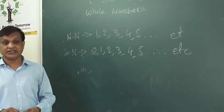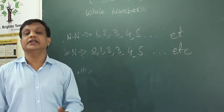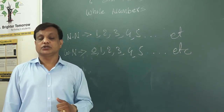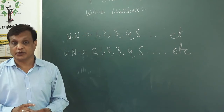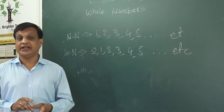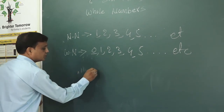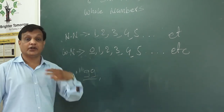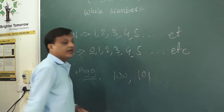Today's topic was natural numbers and whole numbers, and we saw successor and predecessor. Successor means after number, predecessor means before number. Today I am giving you some homework. Solve problems from your textbook. For example: write two consecutive successors of a given number. Consecutive means continuous numbers. For 99, the two consecutive successors are 100 and 101.